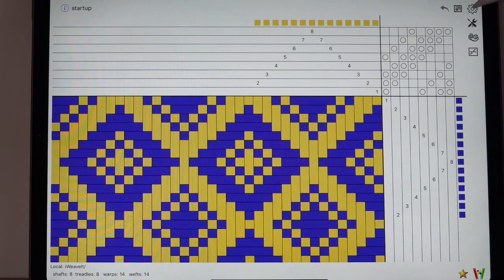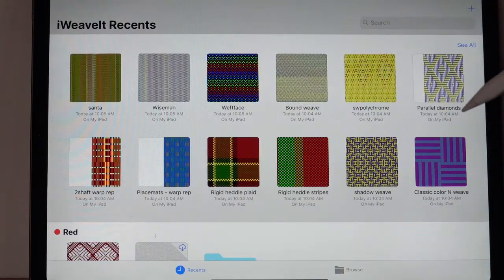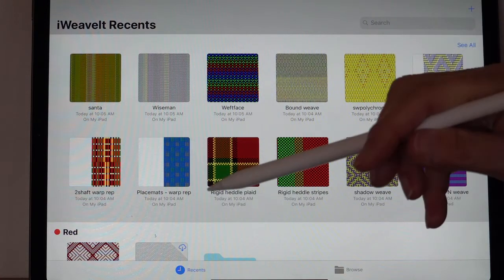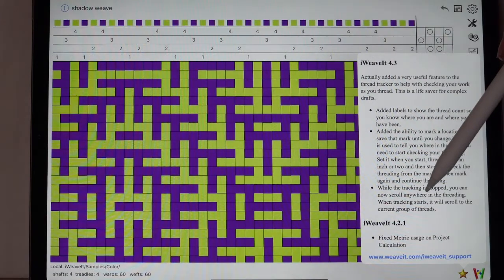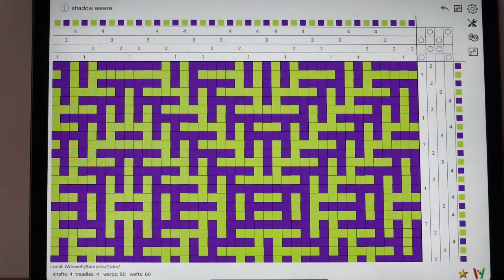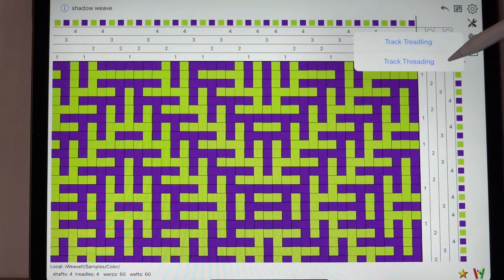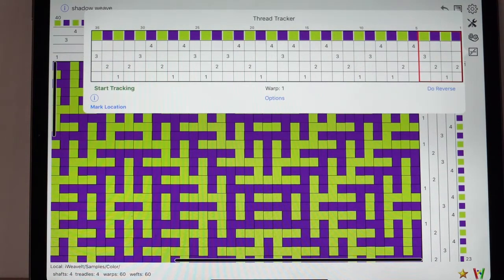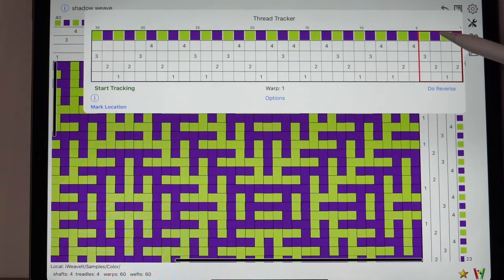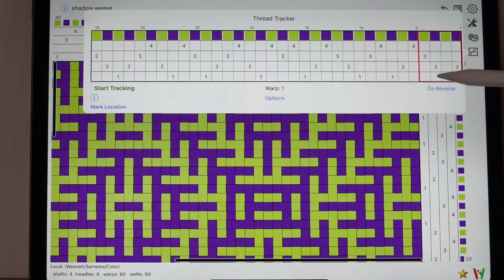To make threading more interesting, I am going to go over and open a different file that has more things. I think I'll open this file. It's in the samples. It's called Shadow Weave. You can see that it's a four shaft pattern with fairly complicated looking treadling. To start the threading, which is the first thing you do, you pick the track treadling threading. We want to do the threading so we're going to tap that one first.